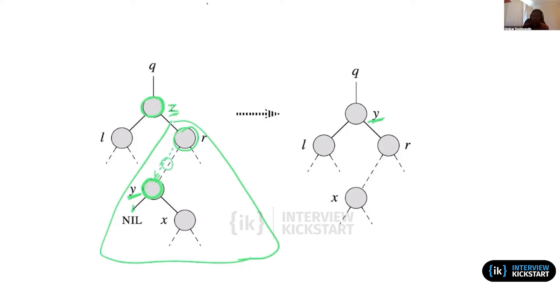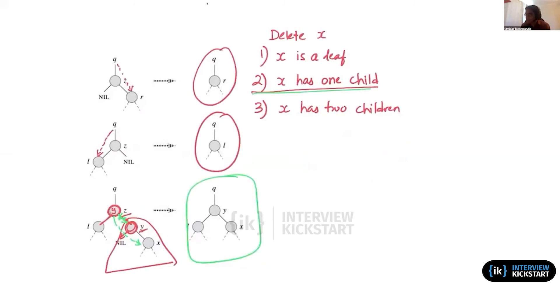And we reorient the pointer from the parent to that node to point to whatever the single child of that node is, if at all it has a single child. Maybe the in-order successor of z does not have any children, but it will definitely not have a left child because we follow all the left pointers as far as we can down this subtree. And so we pluck out this node exactly like we do in case 2.